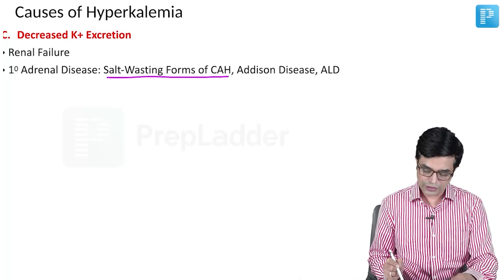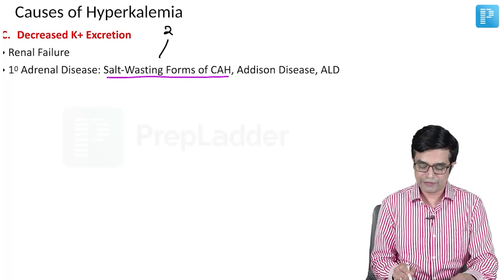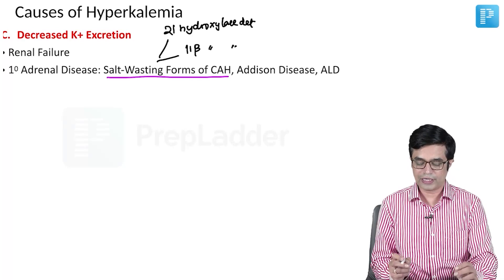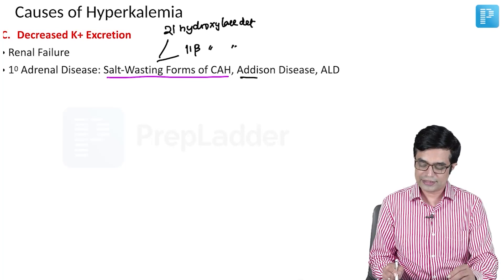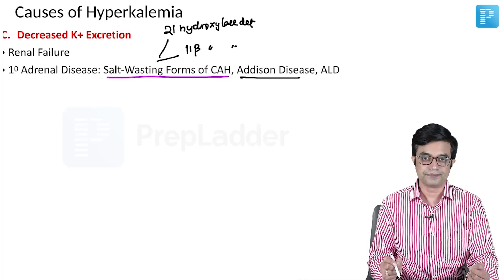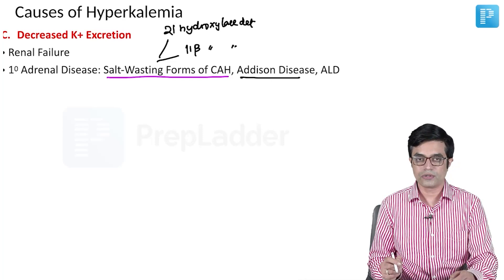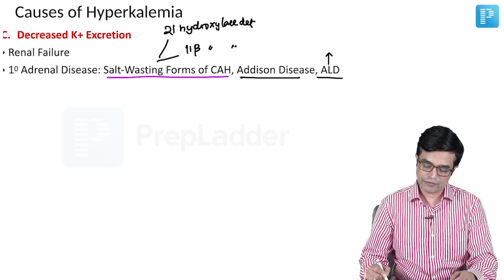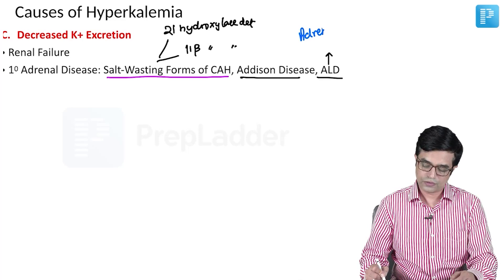It will occur in primary adrenal diseases like salt-losing forms of CAH. There are two important salt-losing forms: 21-hydroxylase deficiency and 11-beta-hydroxylase deficiency. They both will have hyperkalemia. It can be seen in Addison's disease where there is deficiency of adrenal cortical hormones and it can occur in ALD, which stands for adrenoleukodystrophy.